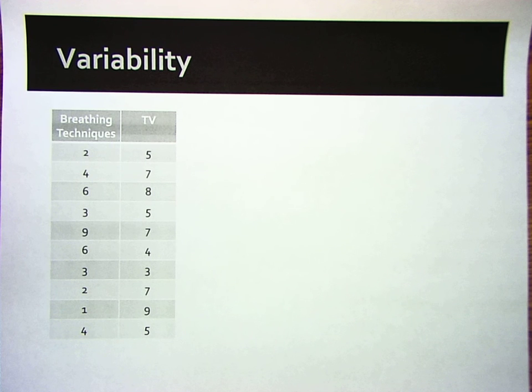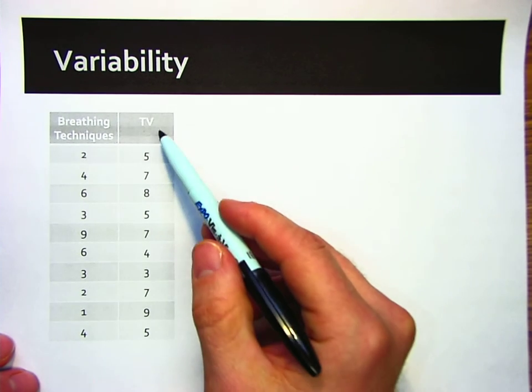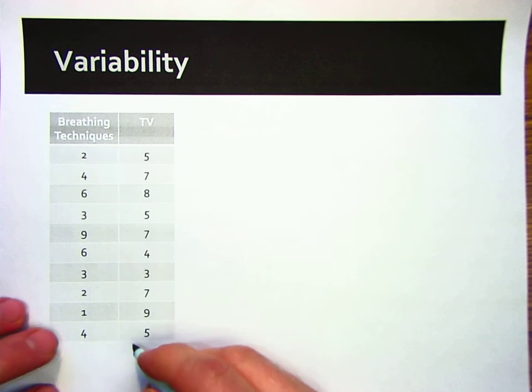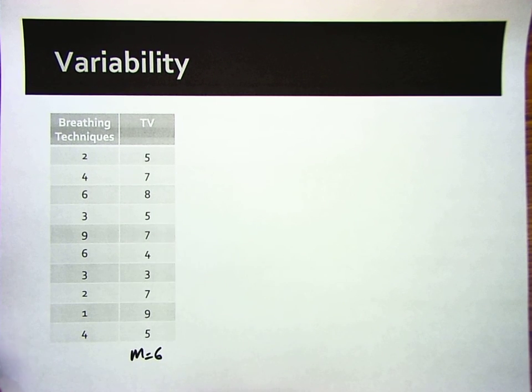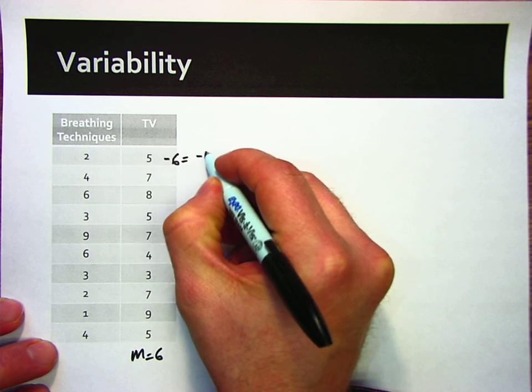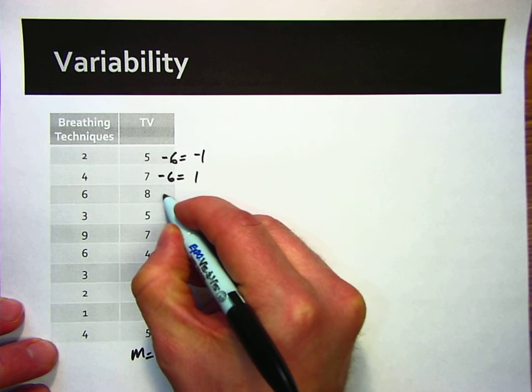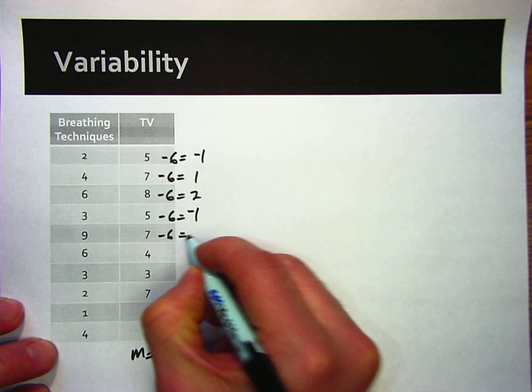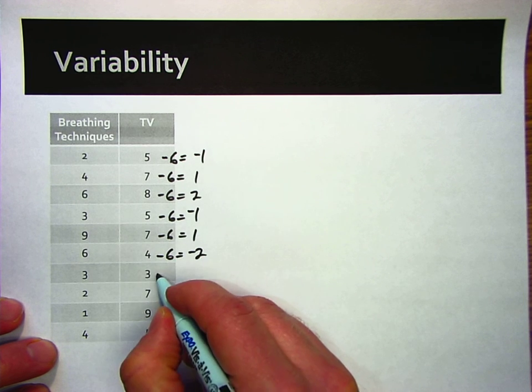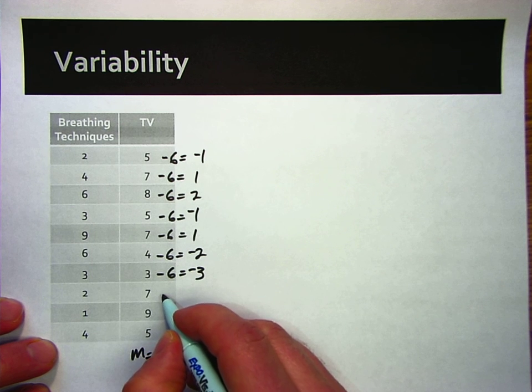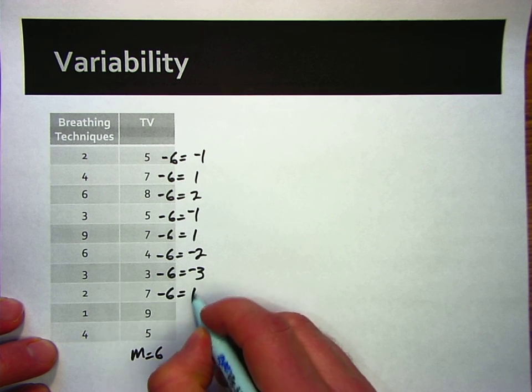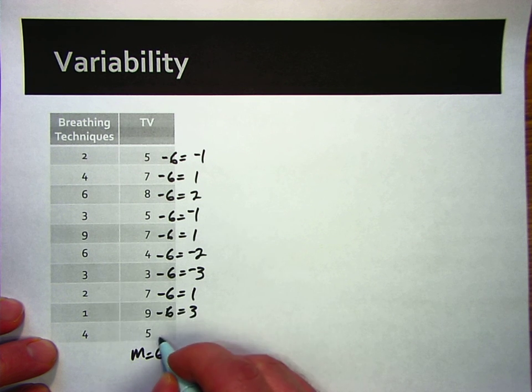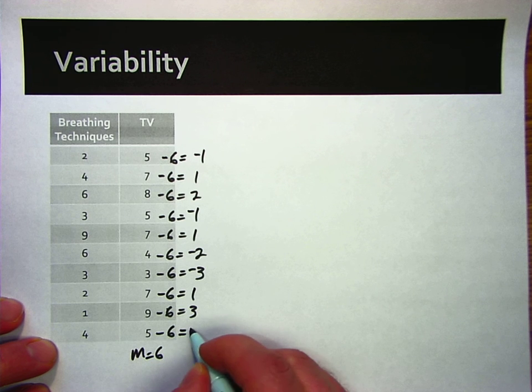So one way in which we could do this that you might think of as being an intuitive way to look at this is we could take the mean for a particular group. So let's focus on the TV data here. And we calculated that mean before with 6. And we could subtract 6 from each of the scores and then get deviation scores for it. So if we subtracted 6, we get negative 1, positive 1, 2, negative 1, positive 1, negative 2, negative 3, 1, 3, negative 1.